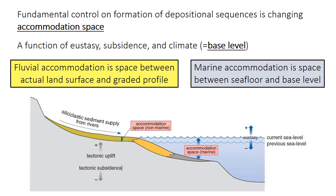You're also familiar with accommodation space, which is the fundamental control on sediment accumulation and the formation of depositional sequences. As you learned, fluvial accommodation is set by this graded profile, the space between the actual land surface and the equilibrium position of the river. In marine settings, accommodation space is the space between the seafloor and base level, which is essentially sea level. So therefore, accommodation space in both settings is also influenced by eustasy, by tectonics, subsidence, or uplift, as well as by climate, although climate is less important.